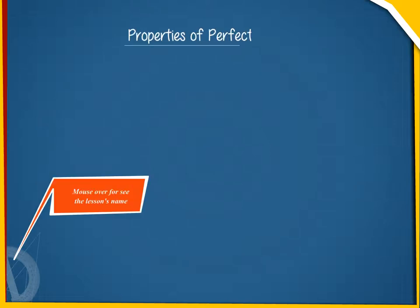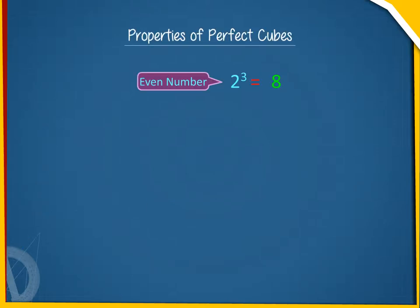Properties of perfect cubes. Property 1: The cube of an even number is even, and the cube of an odd number is odd.